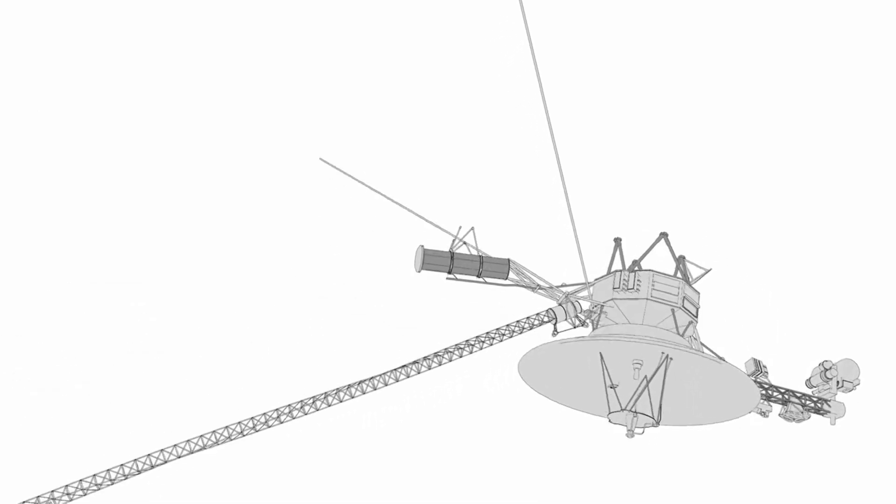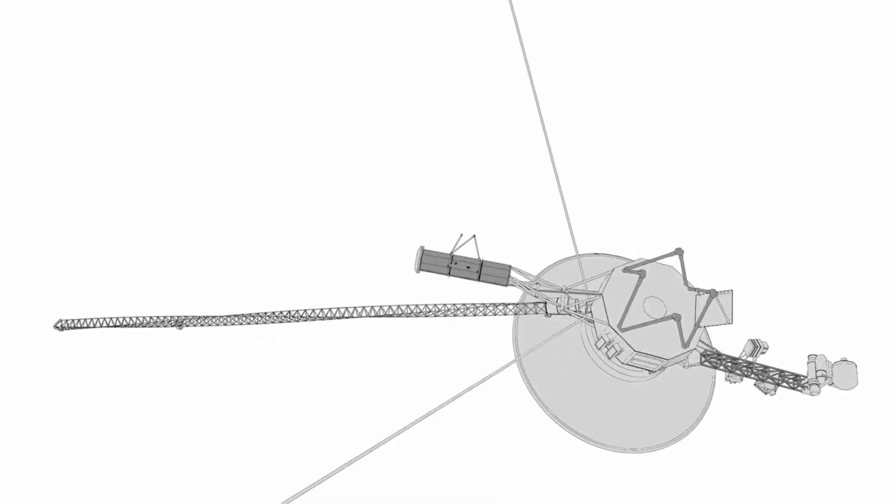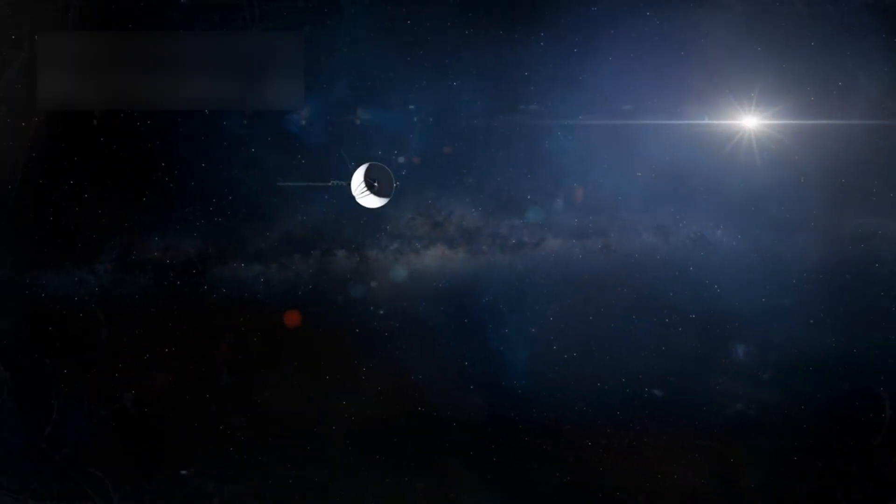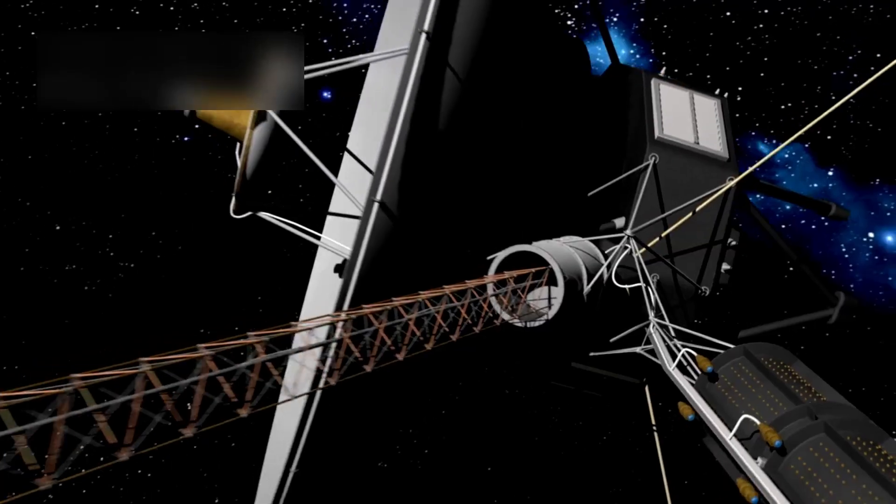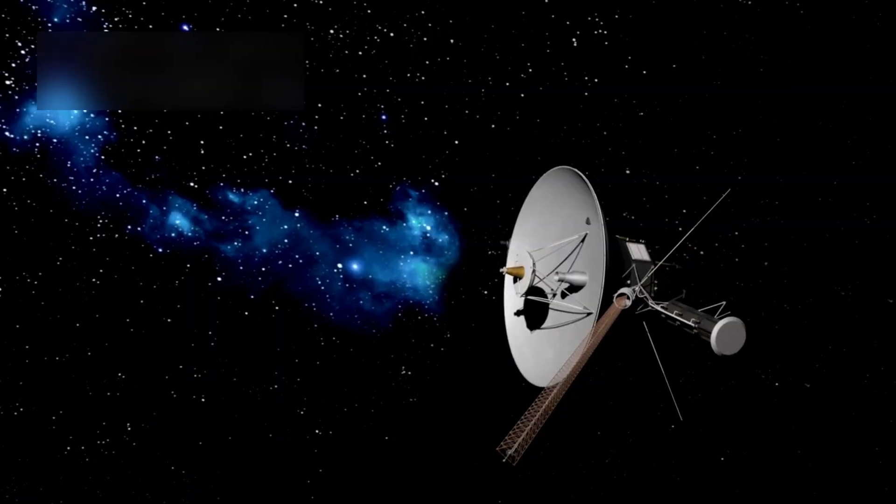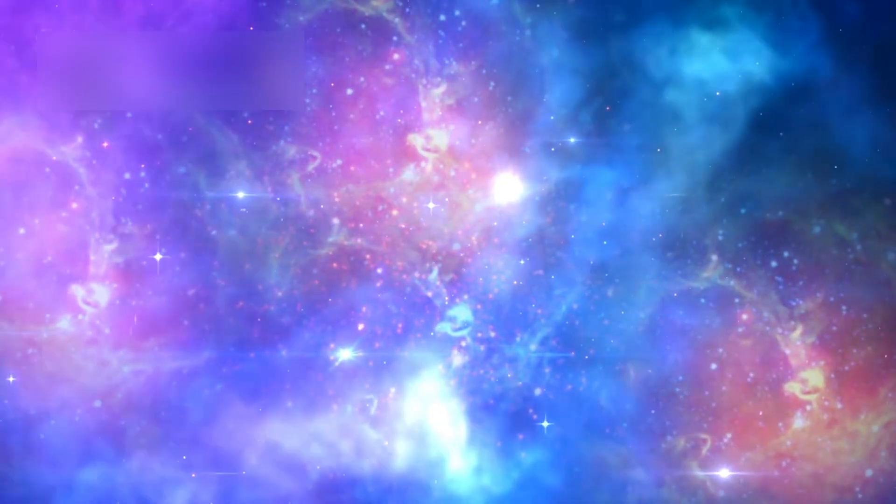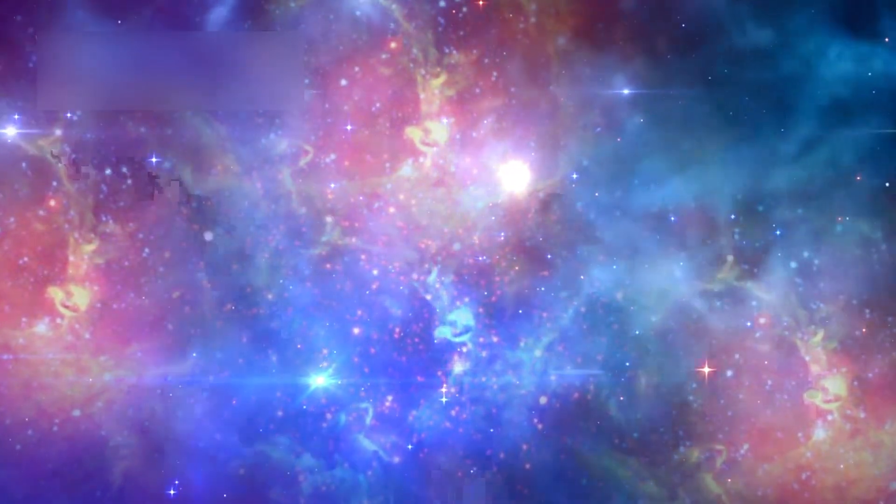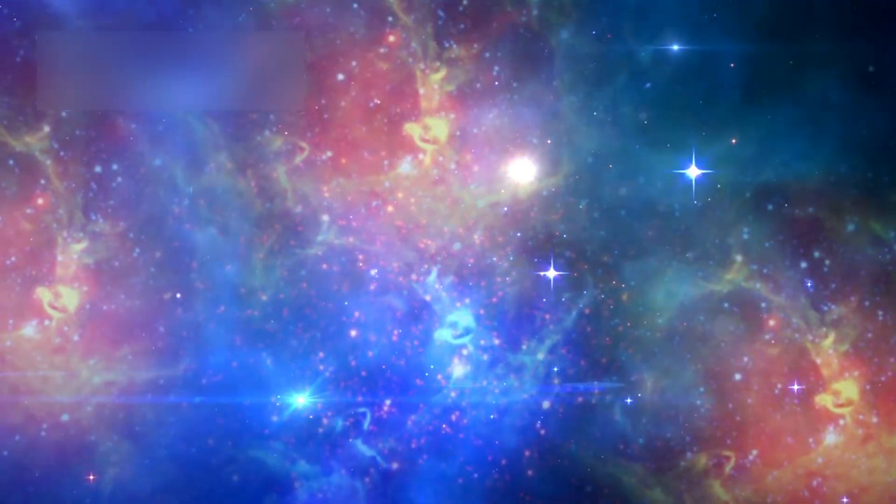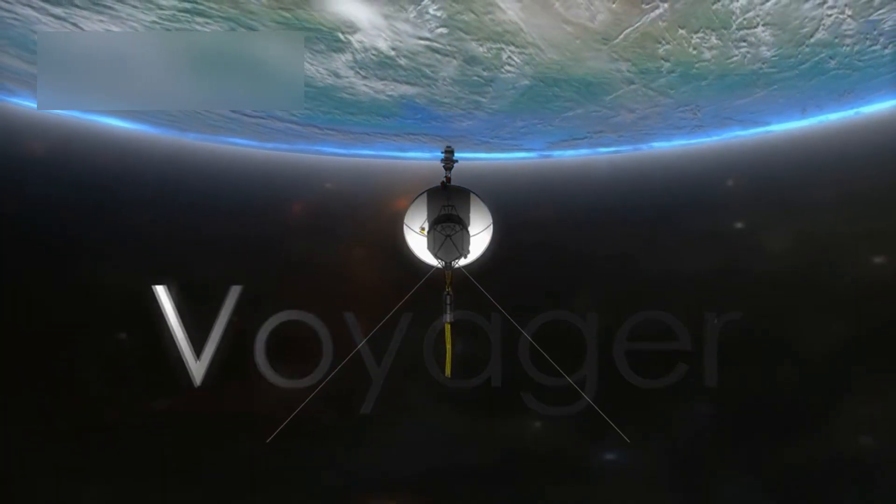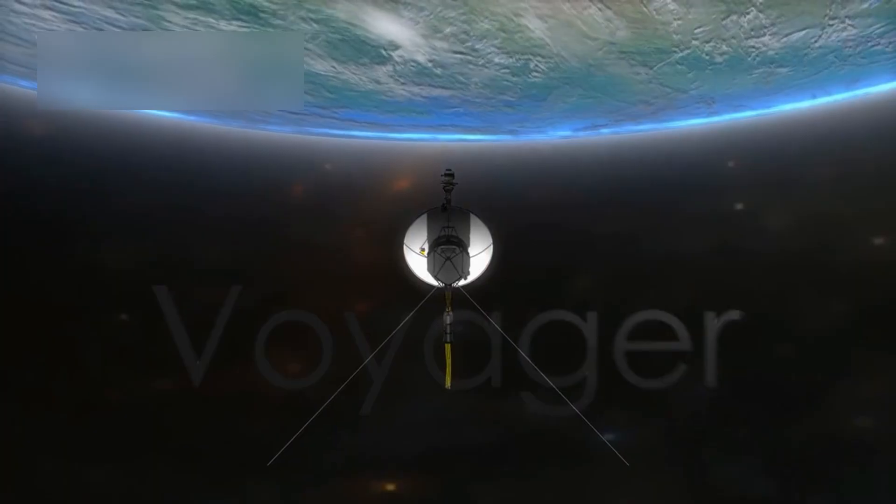As Voyager 1 continues deeper into the unknown, every bit of data it sends helps us get closer to answers about the universe's origin, structure, and future. Scientists are still trying to interpret new data that comes in. Dr. Lisa Kaltenegger, an astronomer at Cornell, said Voyager is still showing us that space is more active, more strange, and more beautiful than we thought. Astrophysicist Neil deGrasse Tyson commented, Voyager 1 is our silent ambassador in the galaxy. It's the furthest extension of human presence, our voice whispering into the stars. These voices from the scientific world show how deeply this mission resonates, not just with researchers but with anyone who looks up at the night sky and wonders what's out there.